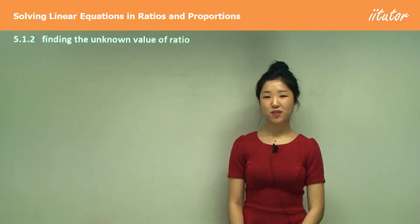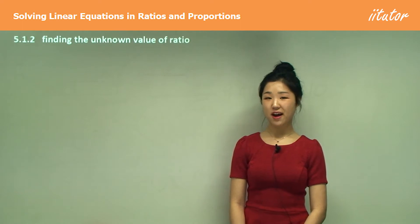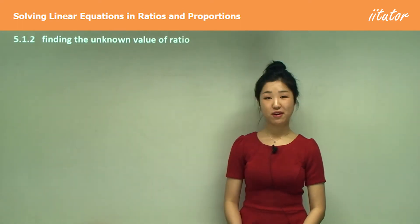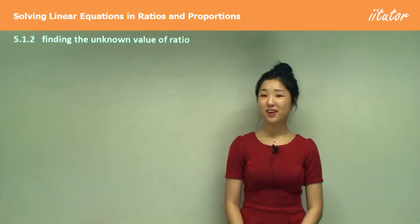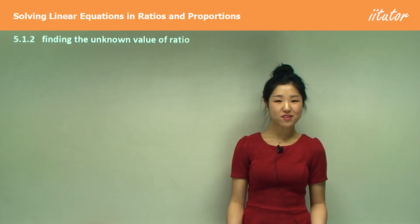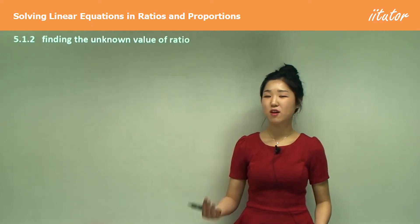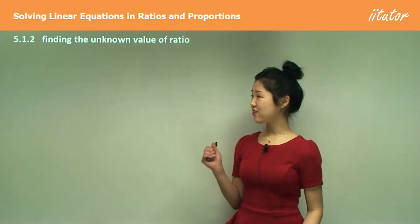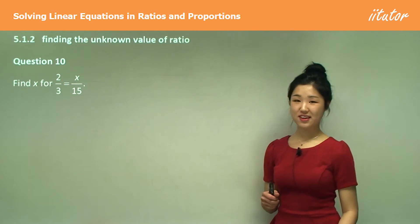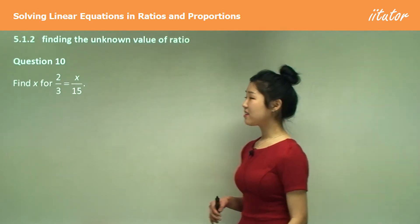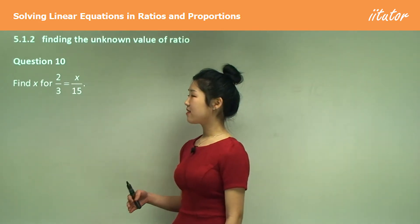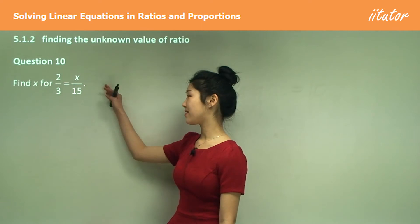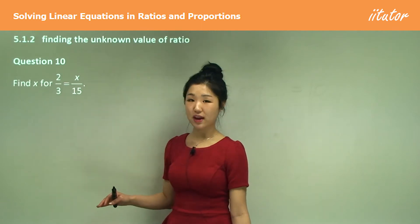This time we're going to be looking at how to find the unknown value of a ratio. You're going to work with some equations and solve them algebraically. Let's start with question 10: find x when 2 over 3 is exactly the same as x over 15.